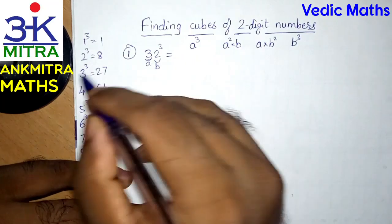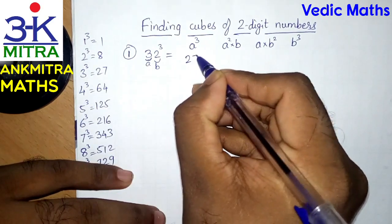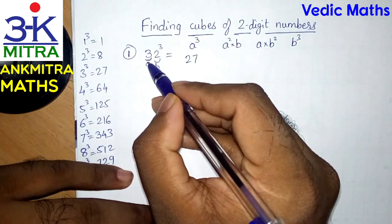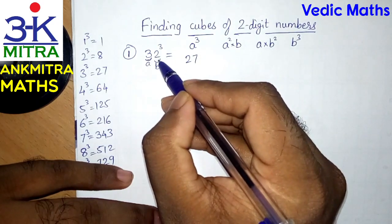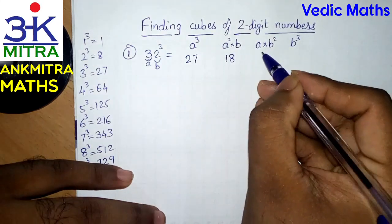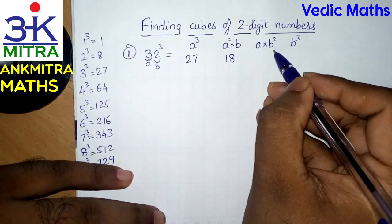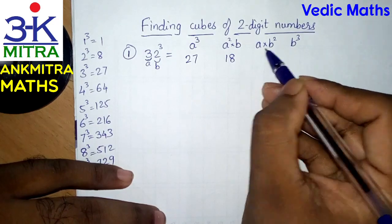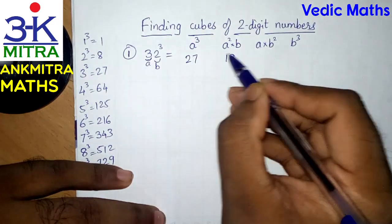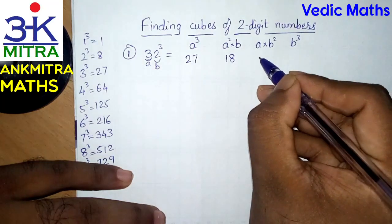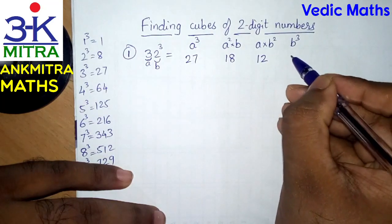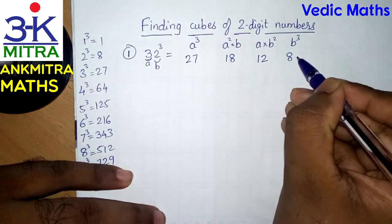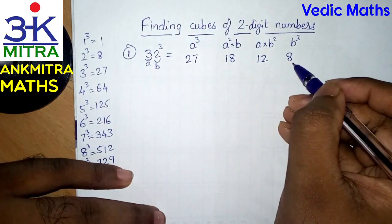So A cube is 3 cube which is 27. Then A square multiplied by B: 3 square is 9, and 9 multiplied by 2 is 18. Then the next number is A multiplied by B square: B square is 2 square which is 4, and 4 multiplied by 3 is 12. The final number is B cube — 2 cube — which is 8. So we have written down the first four numbers: 27, 18, 12, 8.